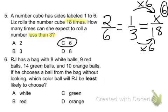Moving on to 6. RJ has a bag with 8 white balls, 9 red balls, 14 green balls, and 10 orange balls. If he chooses a ball from the bag without looking, which color ball will RJ be least likely to choose?